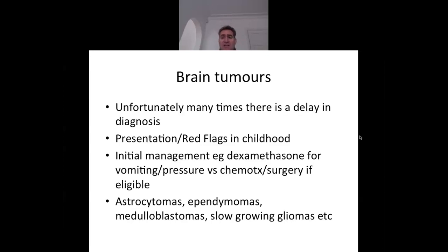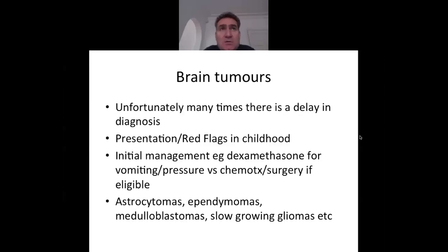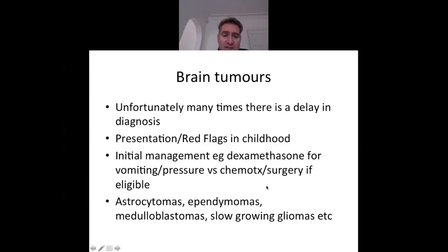Moving on to brain tumours: included because unfortunately in the UK there is a delay in both presentation and diagnosis. It is important to identify red flags; the website Headsmart — created by a family who lost a child to a brain tumour — is an excellent resource. The commonest brain tumours in childhood include astrocytomas, ependymomas, medulloblastomas, and slow-growing gliomas.